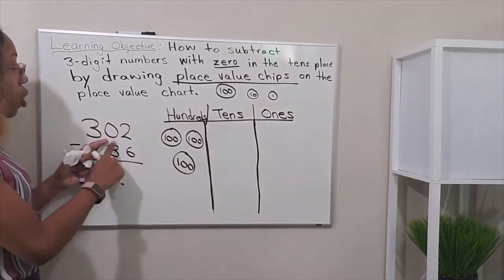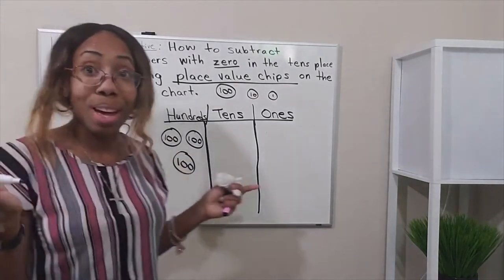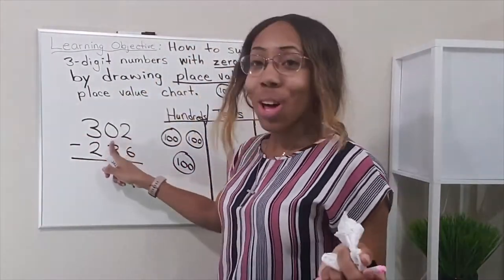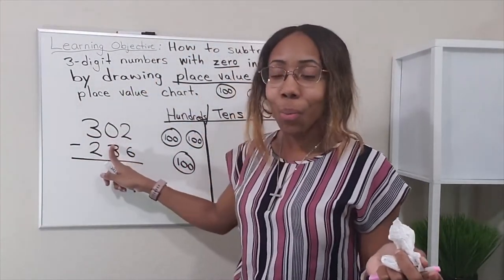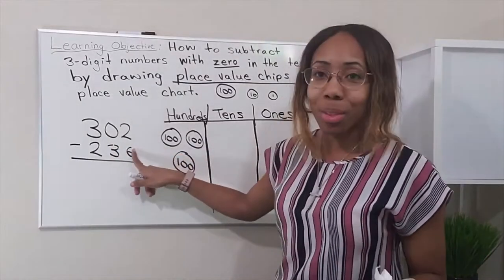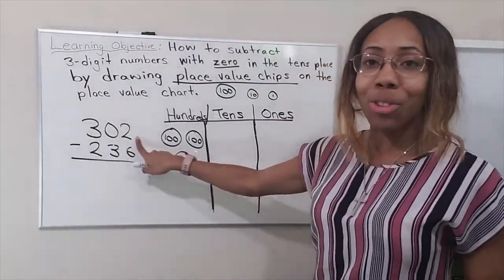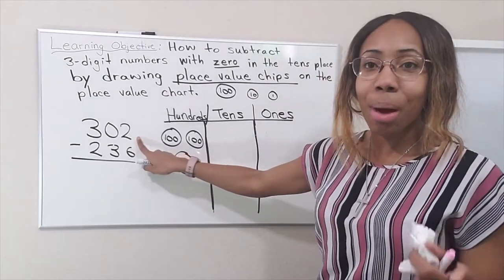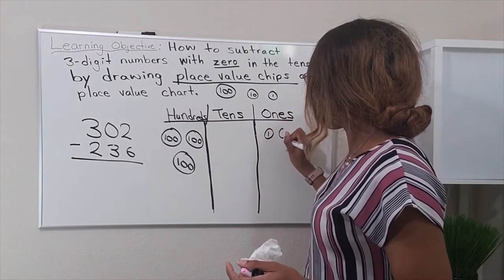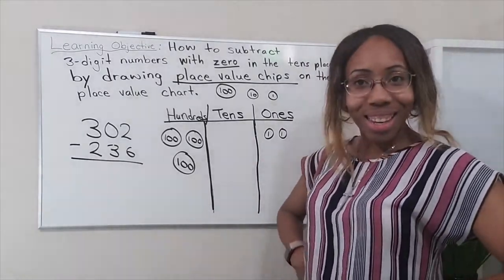Now that you have that, you're going to the tens place. But there are no tens — it's a zero — so skip it. Move on to the ones place. In the ones place, you have two ones, so draw a 1 and a 1. And we're done setting up.